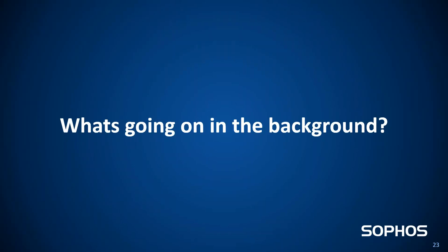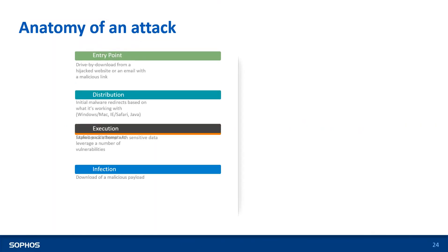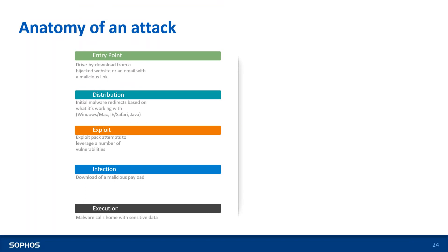Let us understand what goes on in the background during these attacks. We can break a typical web attack into five essential phases or layers: Entry Point, Distribution, Exploit, Infection, and Execution. Let us understand layer by layer what each does.